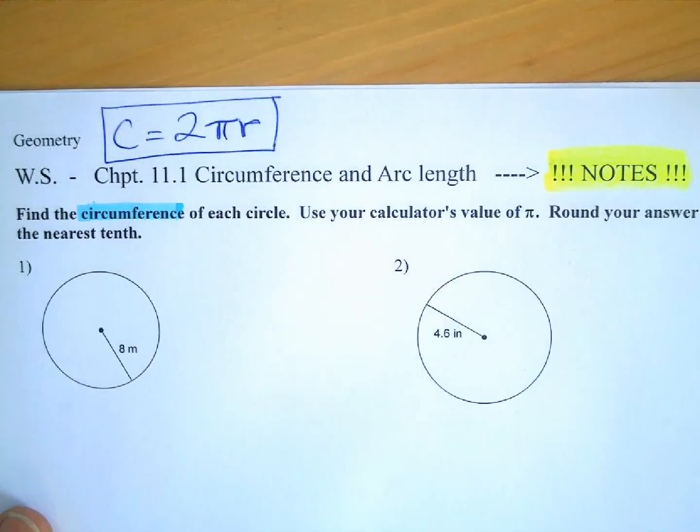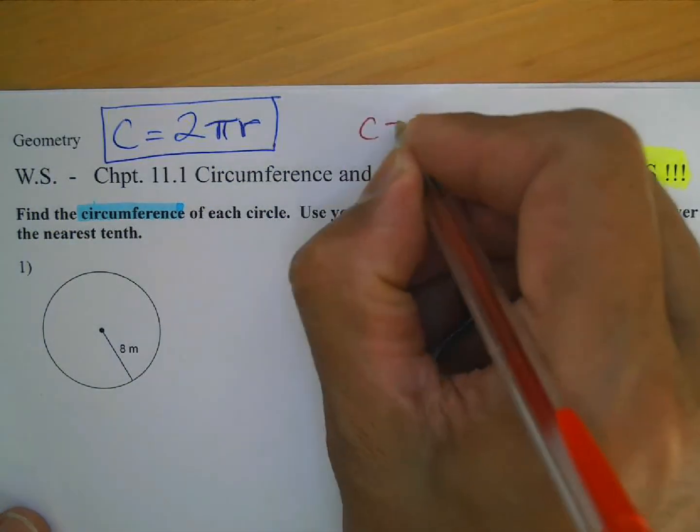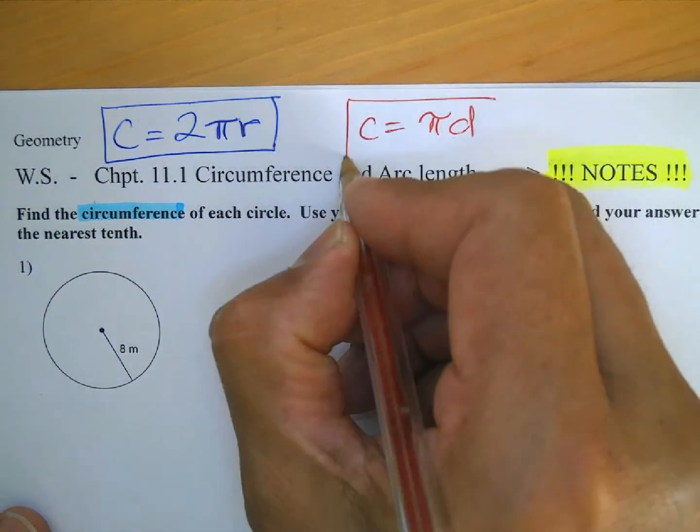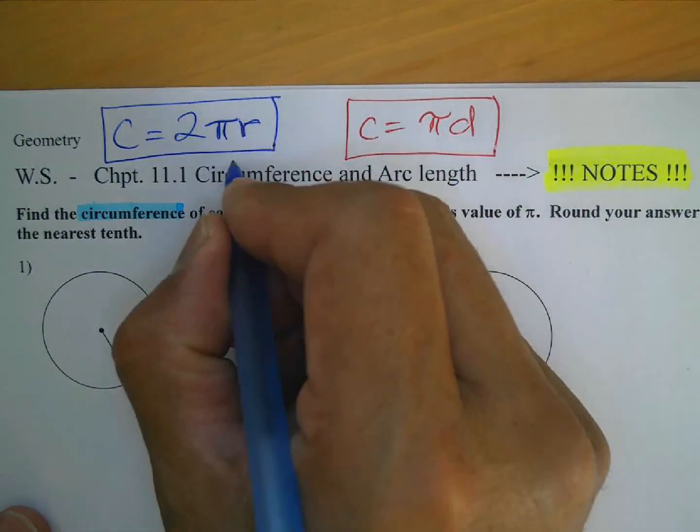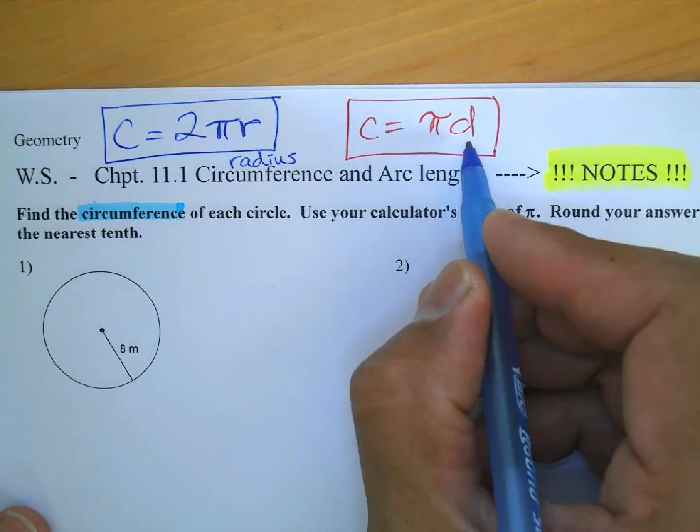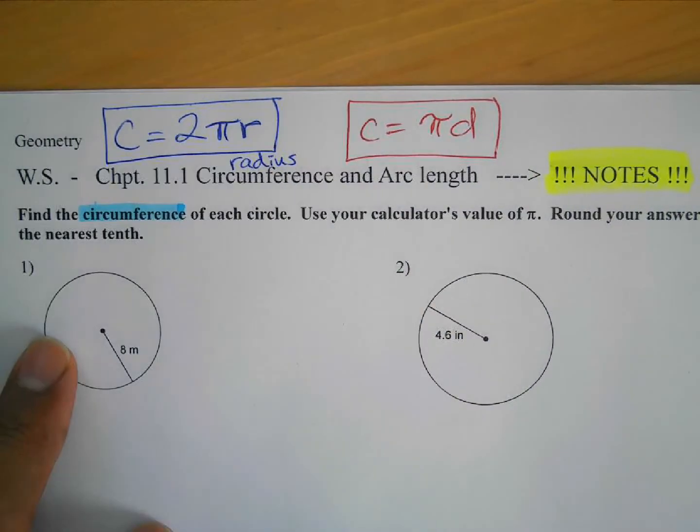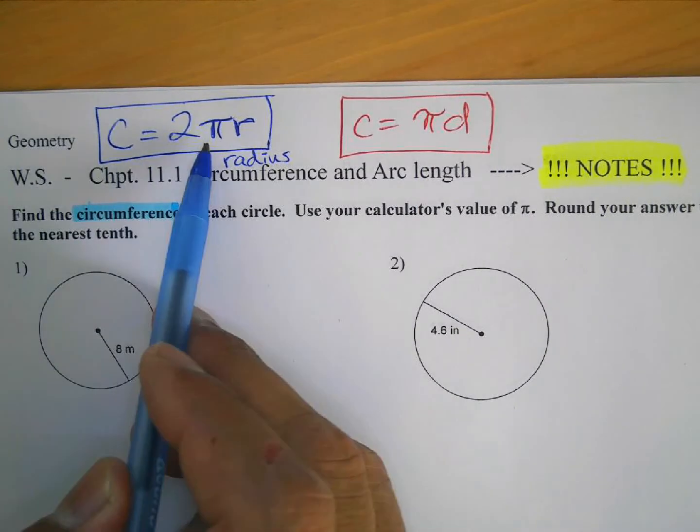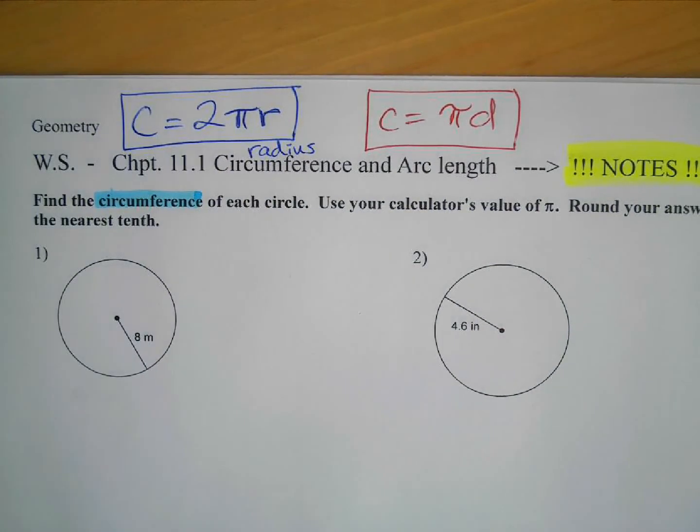All right, we're going to use this formula, but I just want to make sure that you're also aware that there's another one that you might see out there. It's C is equal to pi times D. Where D is the diameter here, R is the radius. The reason why they're the same is that two radius, if you have two radius, it's equivalent to one diameter. But I want to use this one because for the other set of problems, they're using the 2 pi R. So we're going to stick with this one.